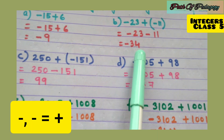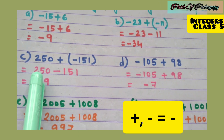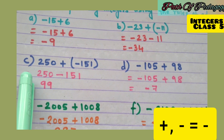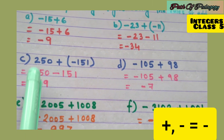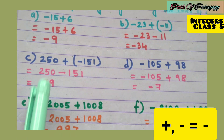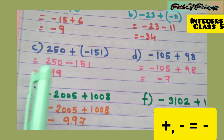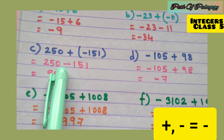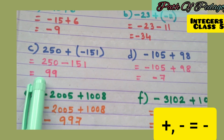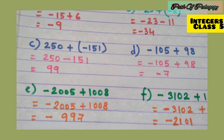Question c: 250 + (−151). Remove the bracket: 250 + (−151). Plus minus is always minus, so we subtract: 250 − 151 = 99. The bigger number is 250 and its sign is plus, so the answer is positive — 99.